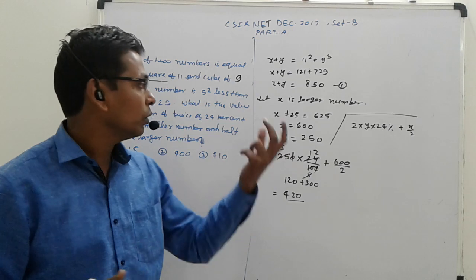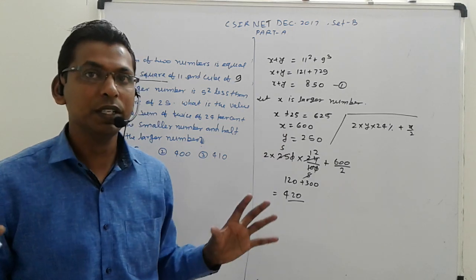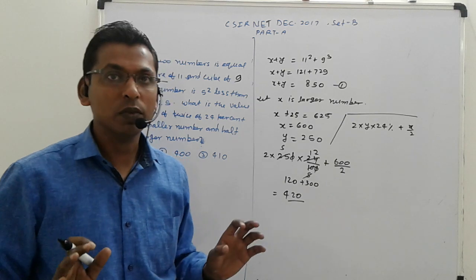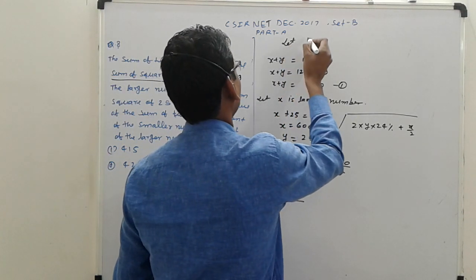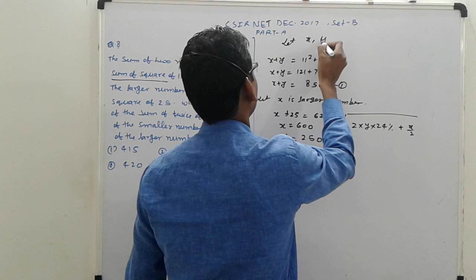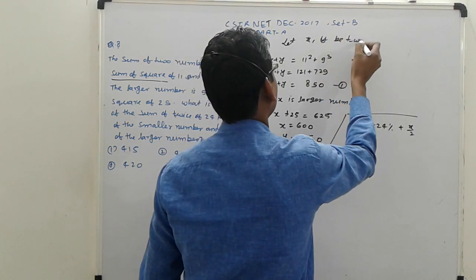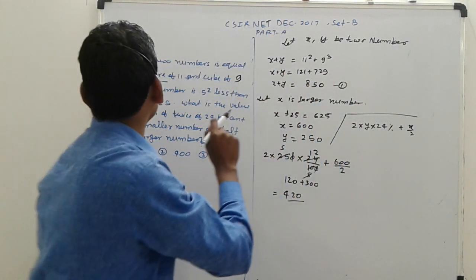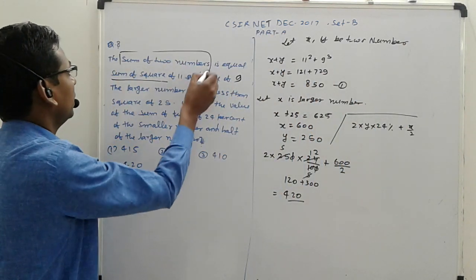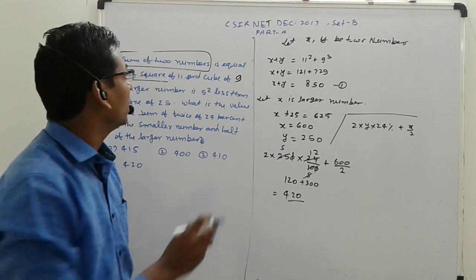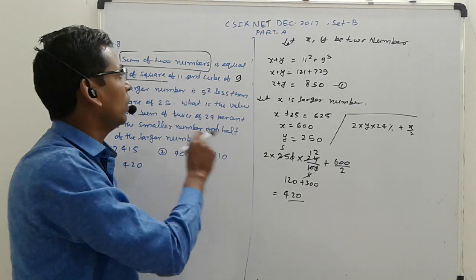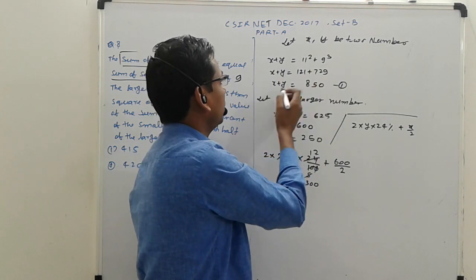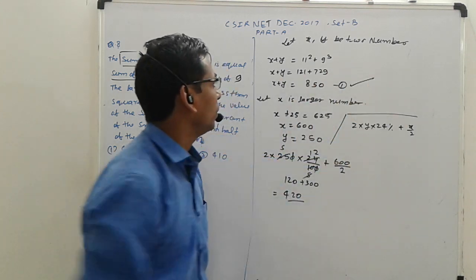First, it's a very simple concept. Let x and y be the two numbers. So x plus y, the sum of two numbers, is given as equal to square of 11 and cube of 9. When we simplify x plus y, we get 850.